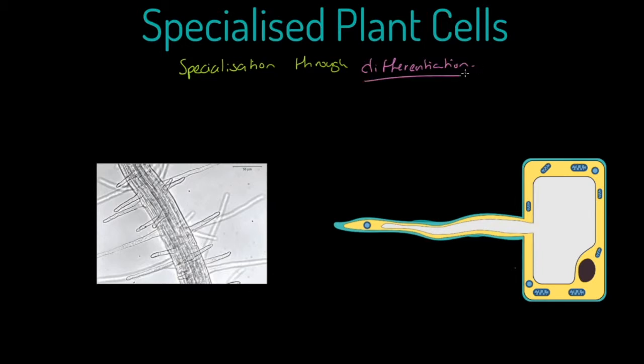I want to immediately introduce you to some friends of ours called root hair cells. These root hair cells are differentiated in a way to achieve two things that are connected. First of all, to increase the surface area of the root.